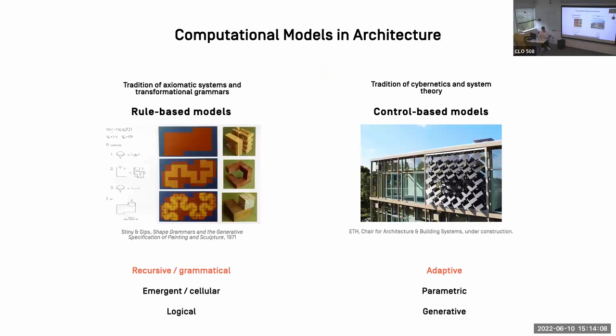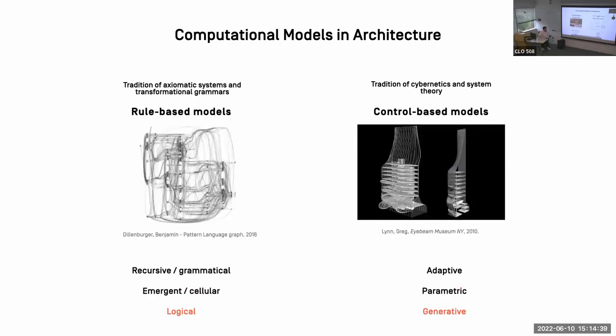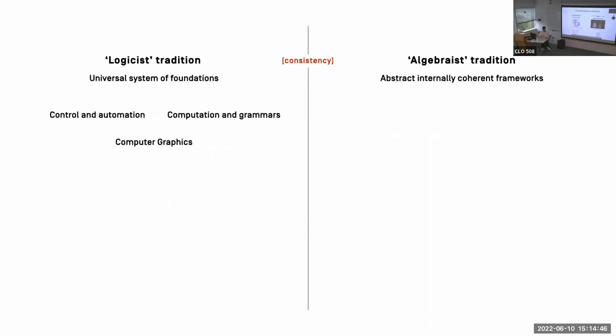Therefore, I would also position computer graphics within the tradition of logicism. But CAD systems are not the only ones that pertain to logicism. I would argue that most of the computational models in the last 50 years subscribe to either the legacy of Wiener, which is control, and the legacy of Chomsky, which is rules. So we have recursive and grammatical as rule-based models. We have adaptive as control-based. We have emergent cellular as rule-based. We have metric as control-based. If you think about what are grasshopper sliders, they are instruments of control. You have rule-based models, like Christopher Alexander, where you have generative models as control-based.